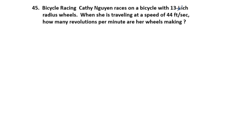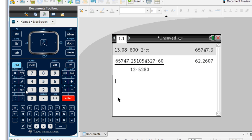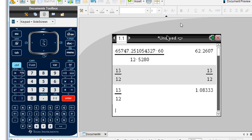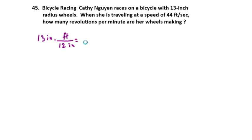In this case, we need to convert the 13-inch radius into feet so we have the same units. So 13 inches divided by 12 inches per foot gives us a radius of approximately 1.08333 feet.